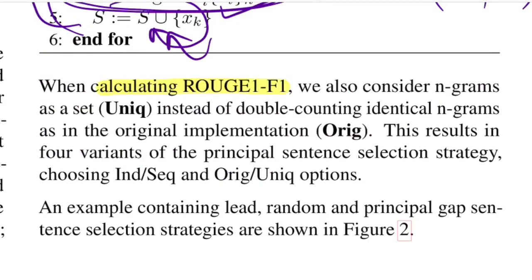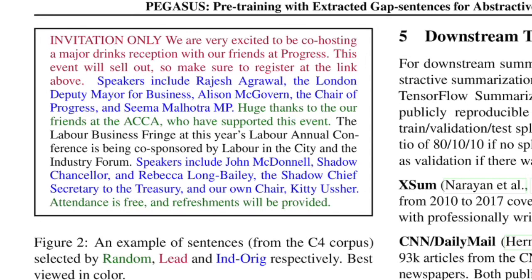They also experimented with how to calculate Rouge F1. The first variant, 'unique,' takes a set over all n-grams to avoid double counting of identical n-grams before calculating Rouge F1. The second is the original implementation, which allows for double counting of identical n-grams. This gives four combinations — independent or sequential, with original or unique — to determine how to select the principal sentences.